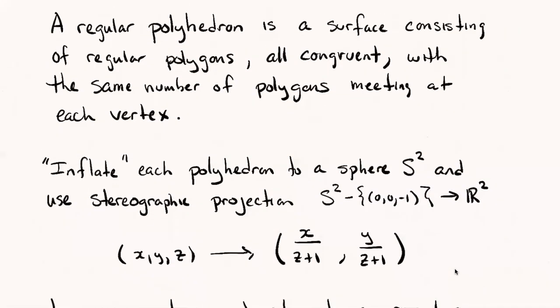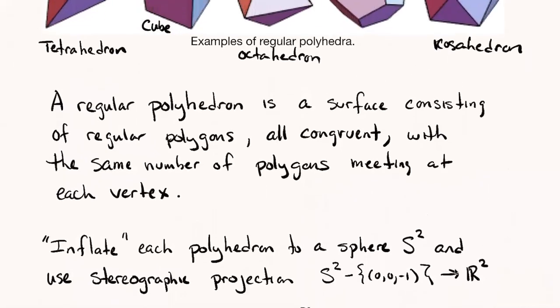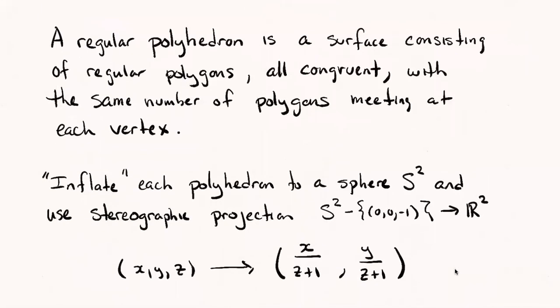If we quote-unquote inflate, I don't have a good mathematical demonstration of this, but just imagine sticking a needle into one of those polyhedra above and pumping air into it until it floats out into a sphere. I'm denoting the sphere by S^2. Then using a stereographic projection map from the sphere, well minus one point, I've decided to delete what I call the south pole, the point (0,0,-1).